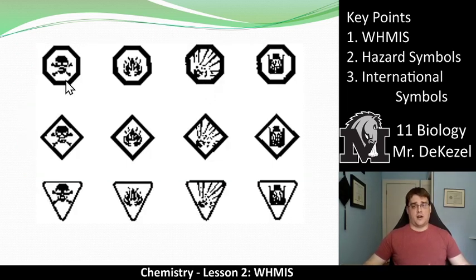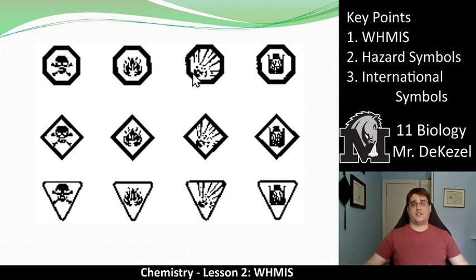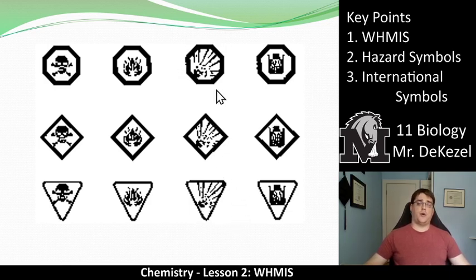The skull and crossbones means poisonous — if it is very poisonous, it appears in the stop sign shape, which has more sides. Flammable is shown up here: more flammable if it has more sides, less flammable if it appears in a triangle with fewer sides. Explosive when heated or pressurized is most dangerous in the shape with more sides and least dangerous in the one with fewer, but both mean explosive.